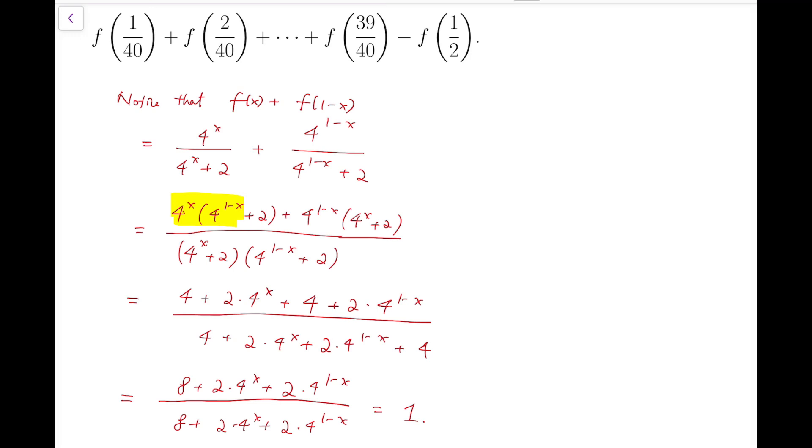Now, the reason that this part will help us solve this problem is that I can take the heads and the tails of the sum. You can see that the sum of these two numbers must be 1, and similar for 2 over 40 and 38 over 40, which is the term before the 39th one.